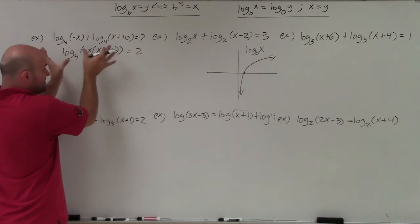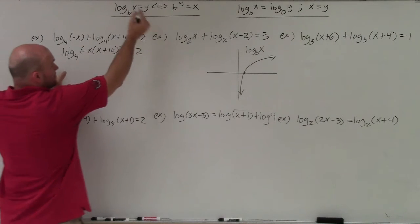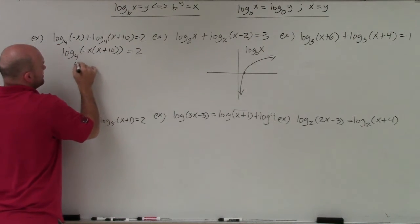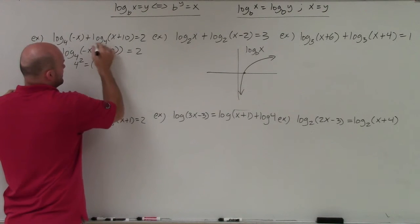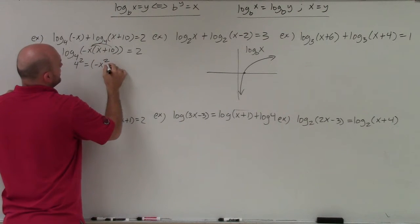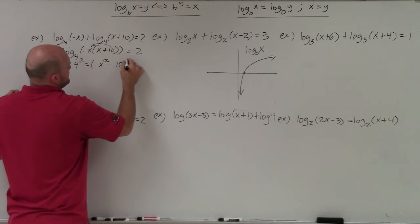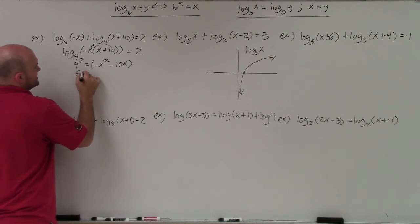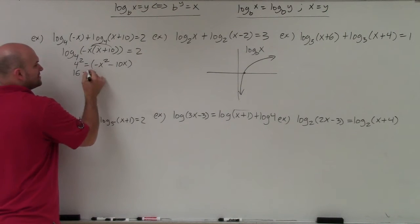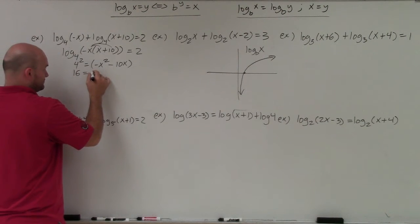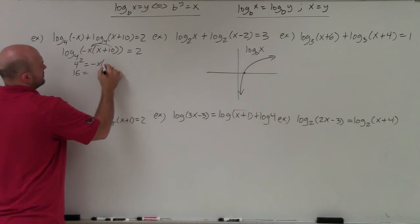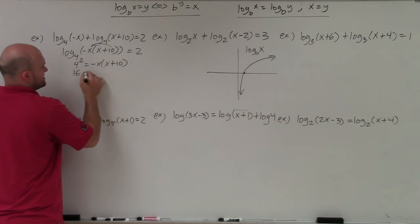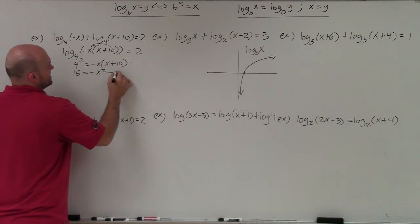Now I have an isolated logarithm equal to a value, so I can rewrite this in exponential form. So 4 squared equals negative x squared minus 10x, applying the distributive property. I can rewrite this as 16 equals negative x squared minus 10x.